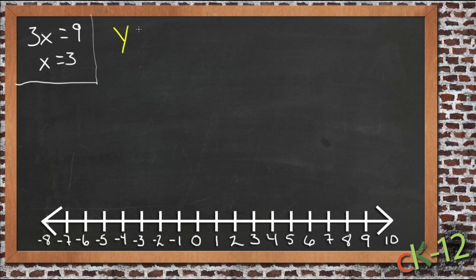Suppose we had 2 plus y is greater than 6. Now we want to find out what y can be, so we need to get rid of this 2. We have 2 being added to the variable, so we'll subtract it from both sides. That 2 will go away. So we have y is greater than 6 minus 2, which is 4.